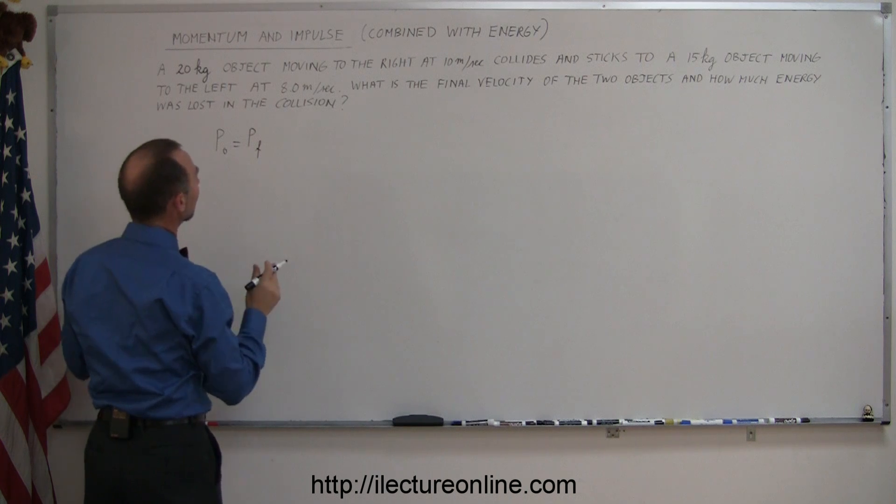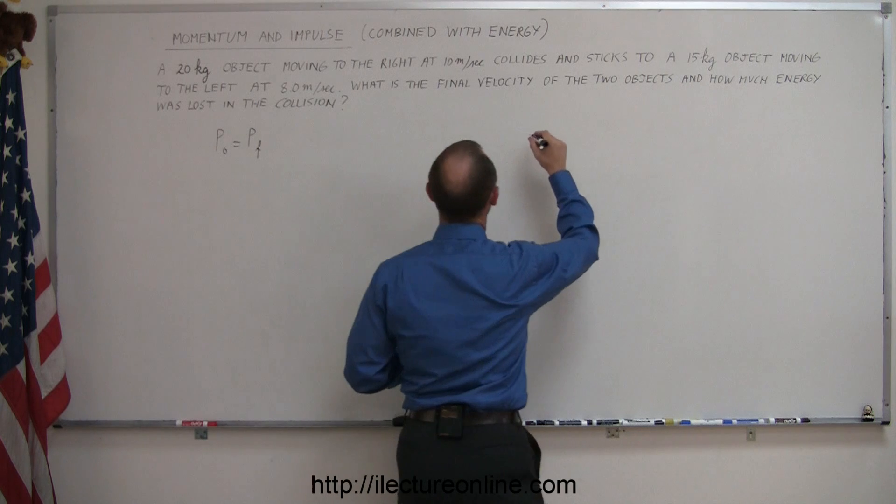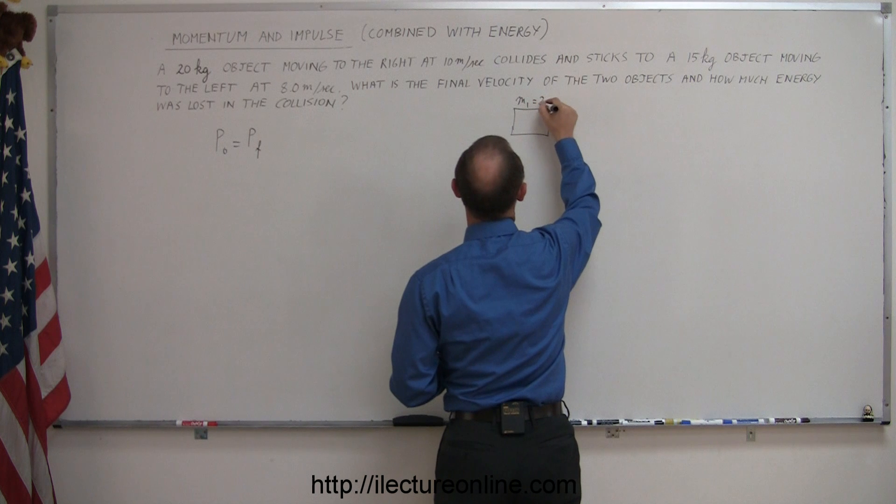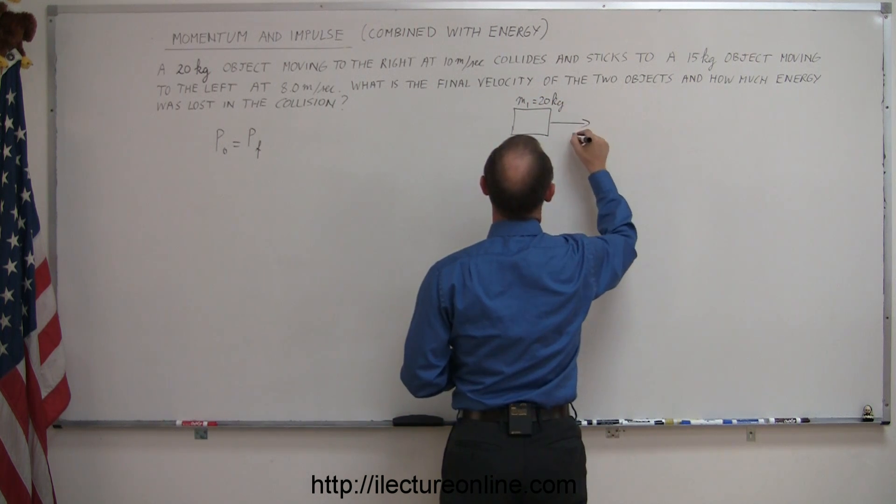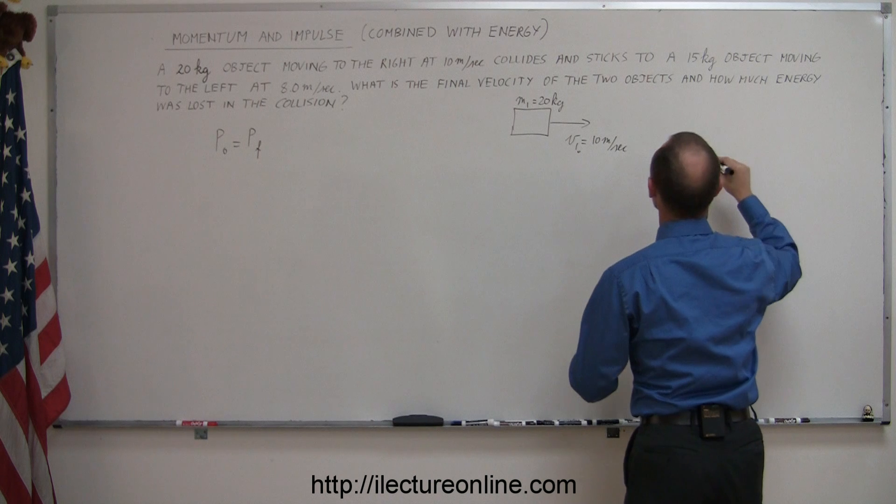So we have two objects that are moving, one coming from the left, one coming from the right. Better draw a little picture of that. So let's see here, we have a 20-kilogram object. So let's call this M1, which is 20 kilograms, and it's moving to the right at V1 initial equal to 10 meters per second.